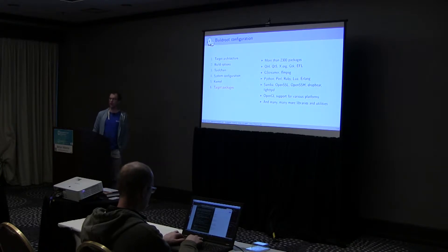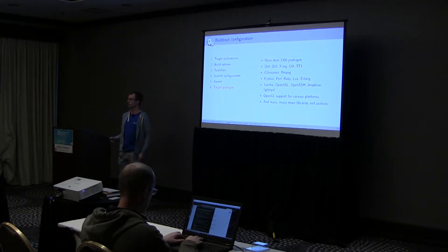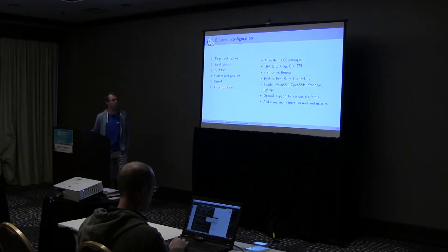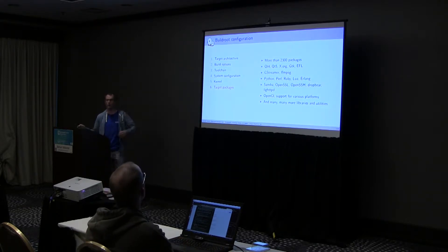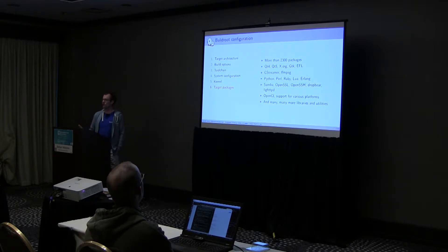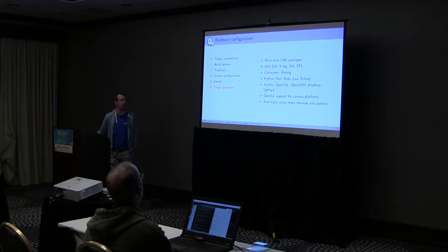Then step six is target packages — all your user space programs and libraries. This is the bulk of what BuildRoot is: building libraries and programs for your target. This is where you find Qt, X.org, GTK, interpreted languages like Python, Perl, and Ruby, networking, crypto, graphics — you name it. We've got 2,300 packages and we're adding more constantly. Almost every day a new package is submitted on the BuildRoot mailing list by contributors.